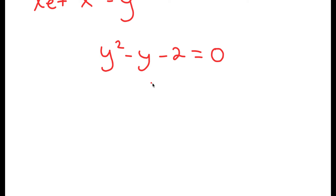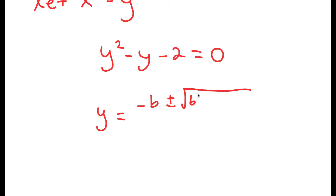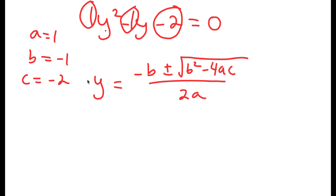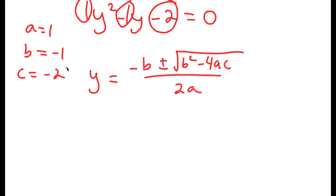To solve this quadratic equation and find both solutions, I'm going to use the quadratic formula: negative b plus or minus the square root of b squared minus 4ac, all over 2a. In this case, a is equal to 1, b is equal to negative 1, and c is equal to negative 2. All that's left is to plug these values into the formula.